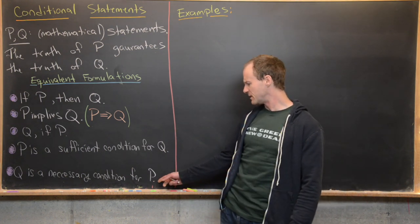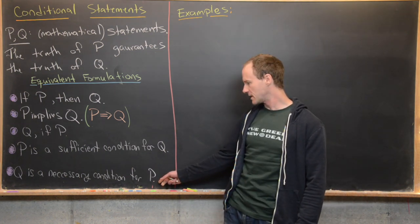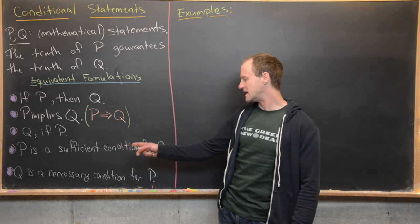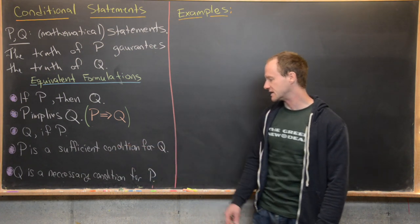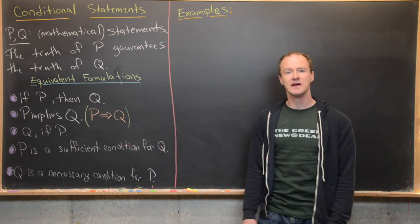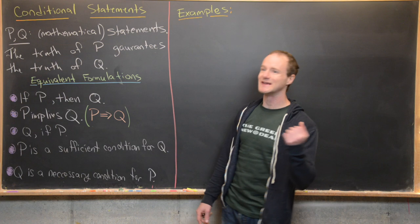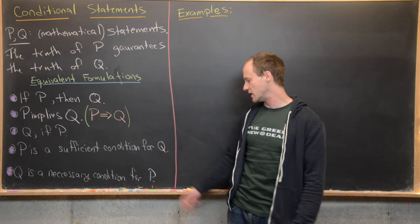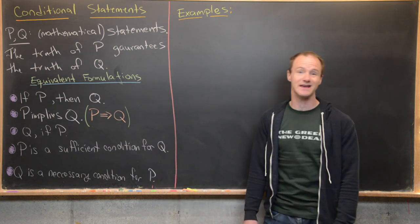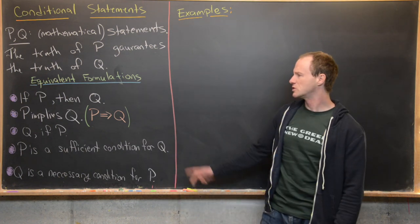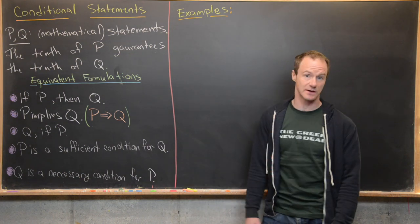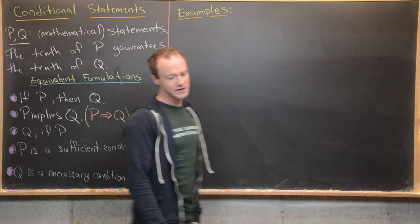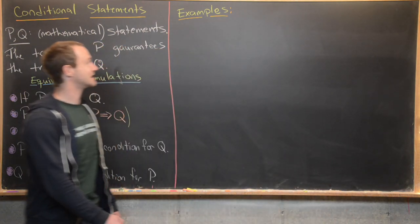Let's think about that last one for a bit. Q being a necessary condition for P means that Q is necessarily true if P is true, which is equivalent to all the formulations above. Now let's look at a couple of examples.